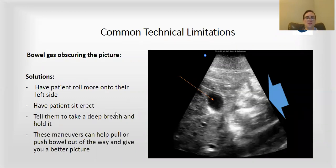One way you can do it is to have the patient roll up more onto their left side. That can cause the bowel to drop away from the gallbladder and you can get a better image that way.